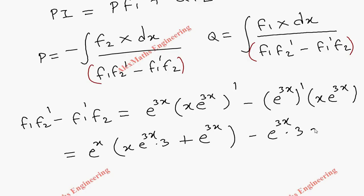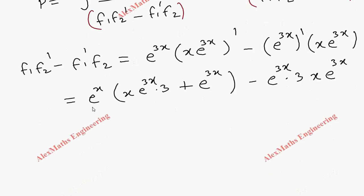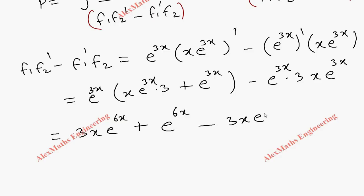Expanding: e^(3x)·(3x·e^(3x) + e^(3x)) - 3e^(3x)·x·e^(3x) = 3x·e^(6x) + e^(6x) - 3x·e^(6x). The two 3x·e^(6x) terms cancel, and we are finally left with e^(6x).